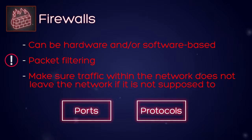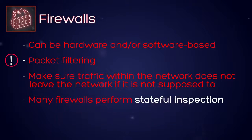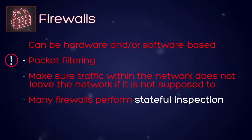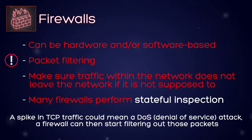Firewalls are usually built to filter traffic by port number and/or protocol. For example, if you do not want a certain port allowed in your network — maybe it's a port for a game — you can set your firewall to block all traffic on that port. If you need to block a certain protocol, you can do that too. Many firewalls perform stateful inspection, which allows a firewall to capture historical information on packets and use that to filter them. For example, firewalls can monitor TCP traffic, and if there's a sudden spike in TCP traffic, that could be a denial of service (DoS) attack — in that case, the firewall can be set to start filtering out those packets.